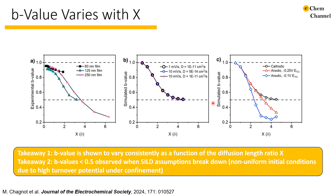Returning to the idea of a constrained potential window, we repeated the simulation with limited turnover potentials, slowly reducing the window. What we observed was that as the potential window became tighter and tighter, we did start to observe a B value depression resulting in these B values of less than 0.5. Essentially, what we were observing was diffusion under confinement breaking down the semi-infinite linear diffusion assumption of the B equals 0.5 condition. This, combined with the limited potential window, was what caused these B values of less than 0.5 to occur.